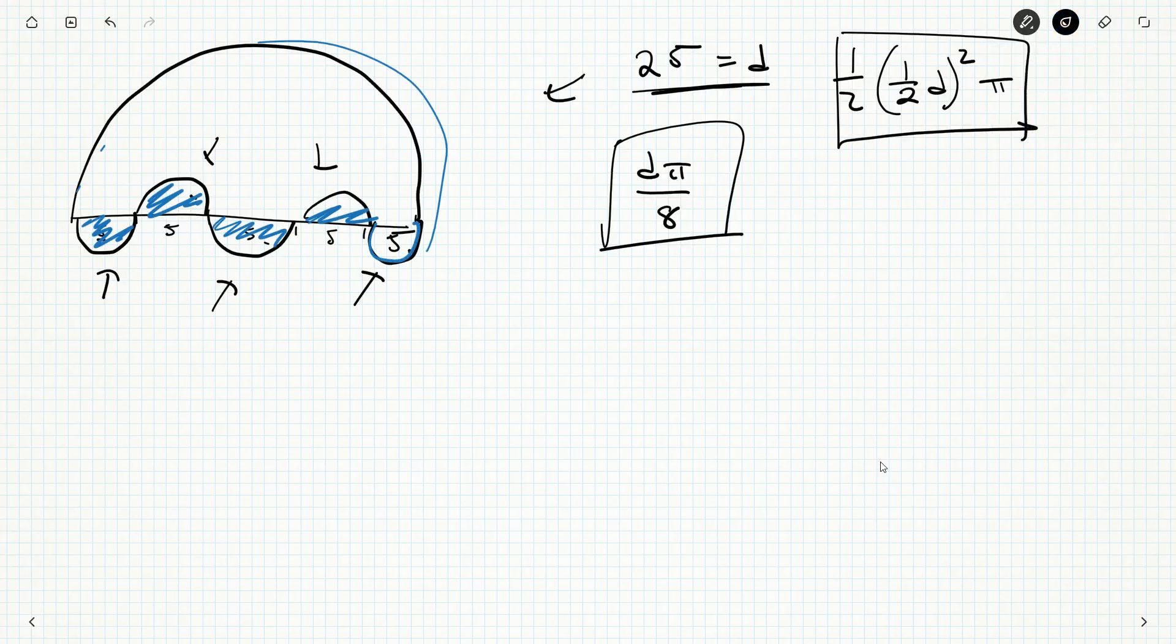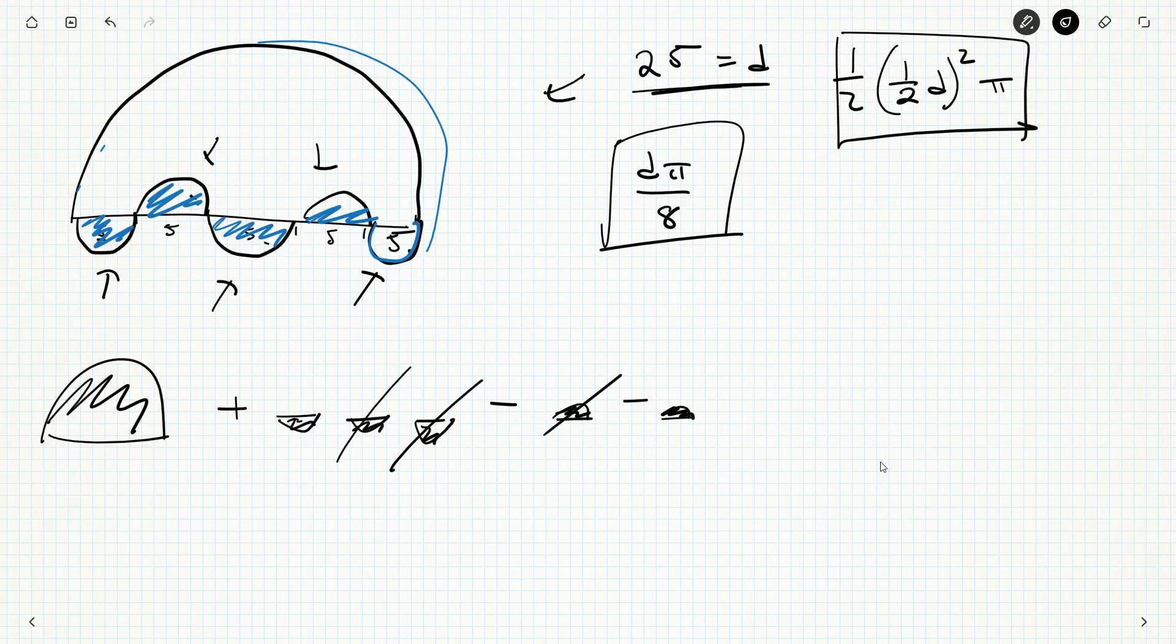And that's fine. However you go through it is fine. But what we want is big area plus a bunch of the little areas minus two more of the little areas. But ultimately, we've got 25π by eight plus 5π by eight. And that simplifies to 30π by eight. And that's going to be our answer.